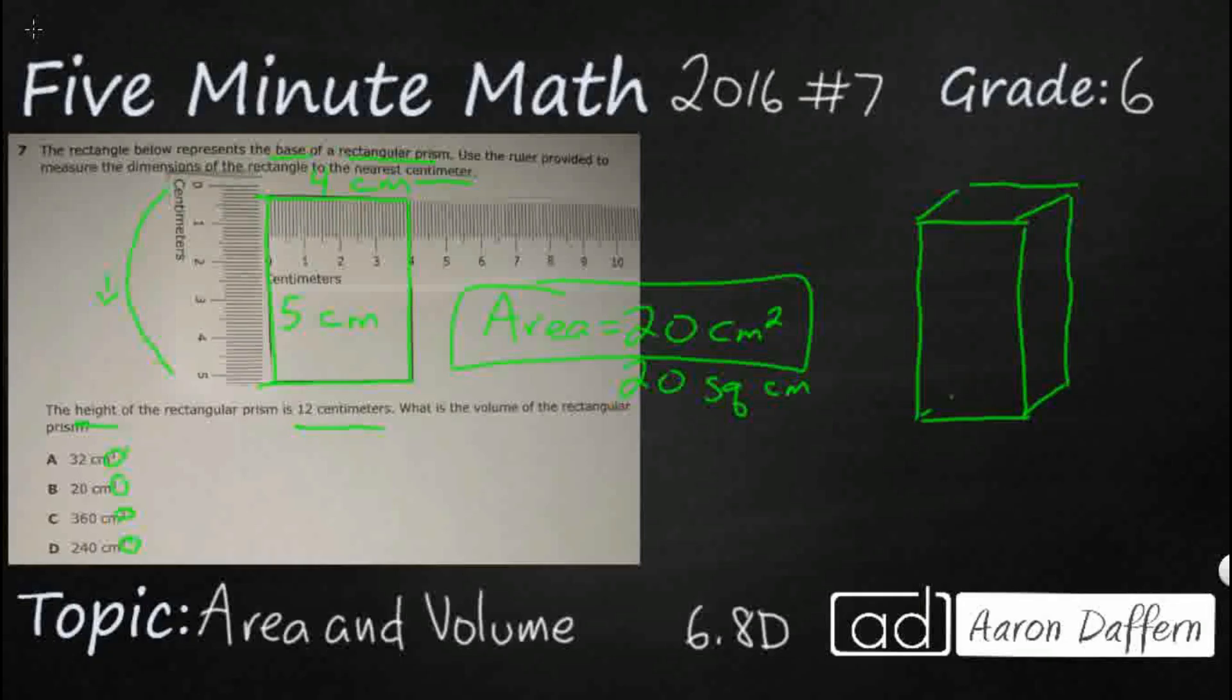So if we look at it like this, we are going to see that our rectangular prism has got a base right here. Let's call this 20 centimeters squared. That's the area, because we have 5 cm here. We've got 4 cm here.